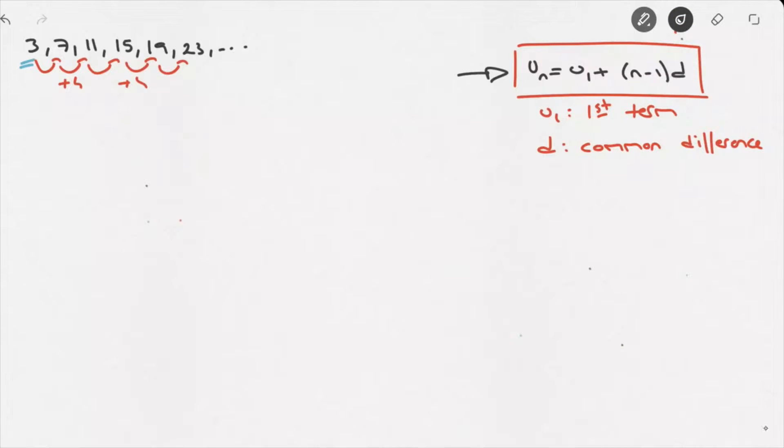So, we can write u_1 equals 3, and d is equal to 4.